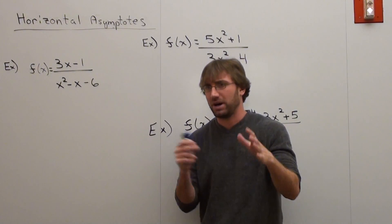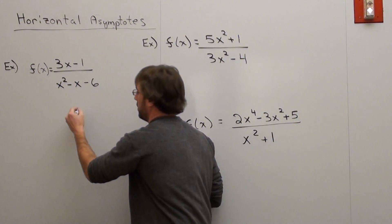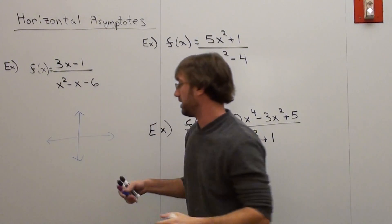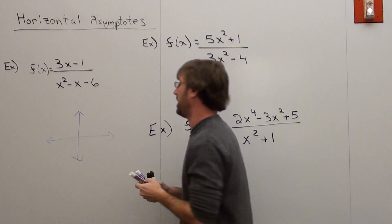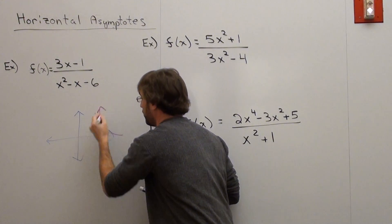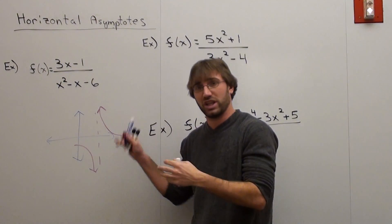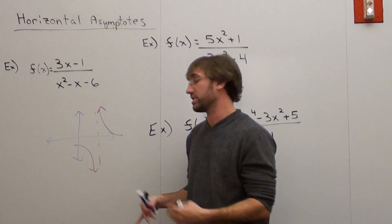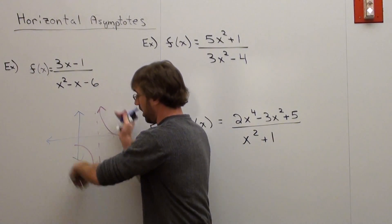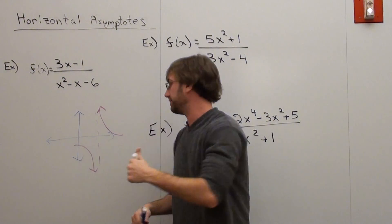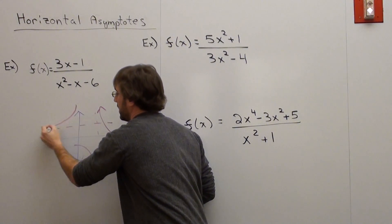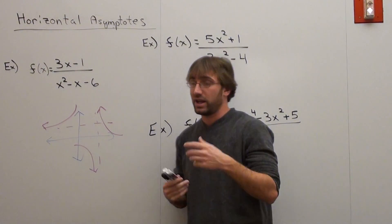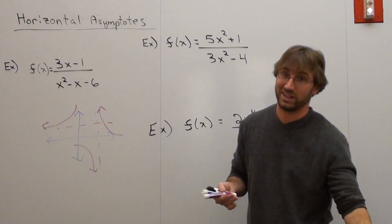Basically, when you have a polynomial graph, a horizontal asymptote means there's a spot on the graph where the graph will never touch — it'll approach it, but it won't touch it. That's actually a vertical asymptote. A horizontal asymptote is the same thing, except instead of approaching up and down, the graph approaches it side to side. So the graph gets ever and ever closer to this line, it never touches it — that's a horizontal asymptote.